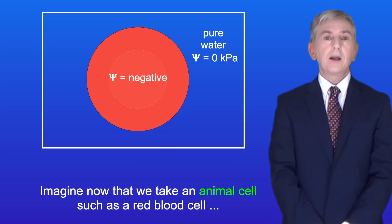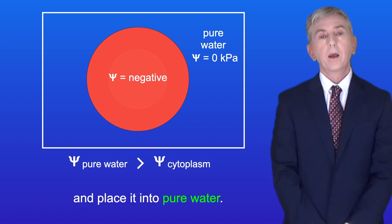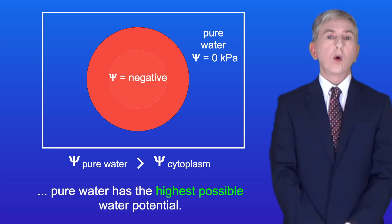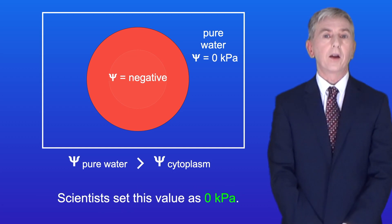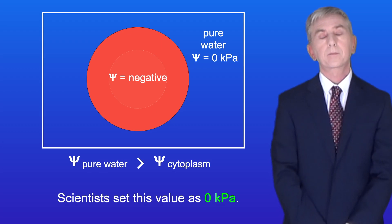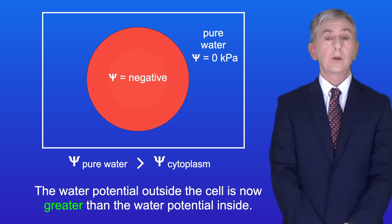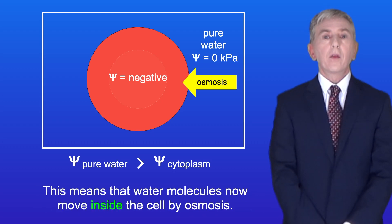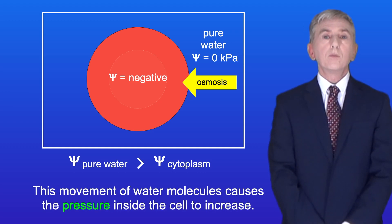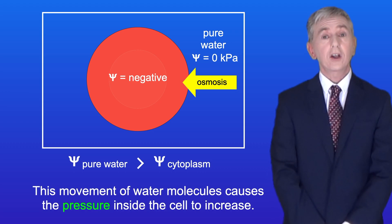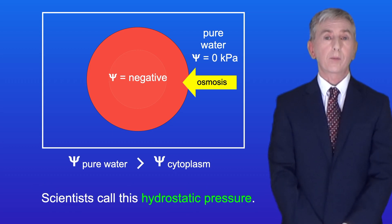Now imagine we take an animal cell such as a red blood cell and place it into pure water. Pure water has the highest possible water potential and scientists set this value as zero kilopascals. The water potential outside the cell is now greater than the water potential inside, which means that water molecules move inside the cell by osmosis. This movement of water molecules causes the pressure inside the cell to increase — scientists call this hydrostatic pressure.